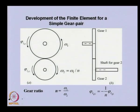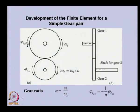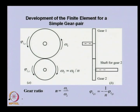We have a gear pair with rotational speeds omega 1 and omega 2, where the angular speed of gear 2 is related to gear 1 with the gear ratio but in the opposite direction. Taking the torsional oscillation angular displacements, I am taking both as counter-clockwise as positive convention, and the negative sign will take care of the direction. The angular displacements of gear 1 and gear 2 are related by the gear ratio.